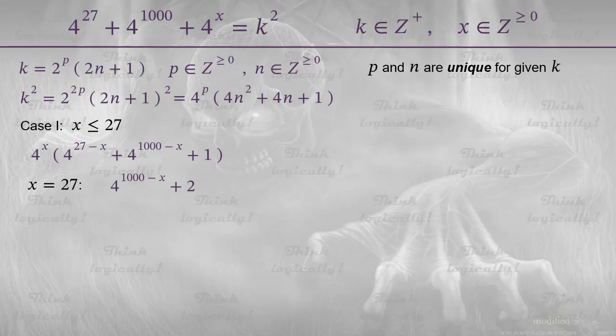Since 4 to the power of x is a full square, the expression in the brackets must be also a full square. And since this expression is quite obviously an even number, it must be divisible by 4. Whereas, as we can see, it gives remainder 2 when divided by 4. Therefore, in our case, x must be less than 27. So, the expression in the brackets is an odd number, just what we need.